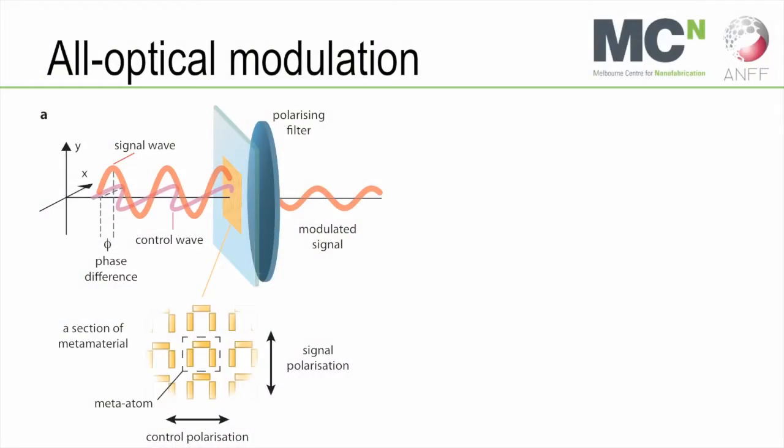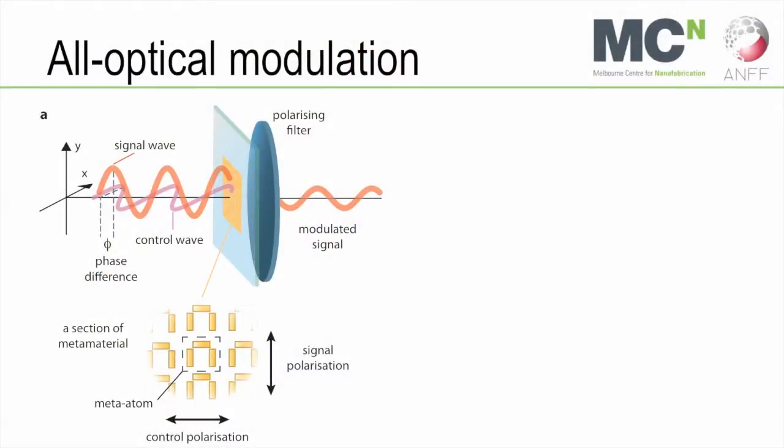Just for the all-optical modulation, the idea is we make an array of these structures, and that array, the spacing between these is much smaller than the wavelength of light. From the point of view of light, it looks like a uniform material, but it actually has a structure that consists of those rods, and that's what the metamaterial is. We make a whole array of those, so it looks like an artificial material. We shine two light waves, a signal wave and a control wave, with a well-defined phase difference, and we use that to modulate the signal wave.